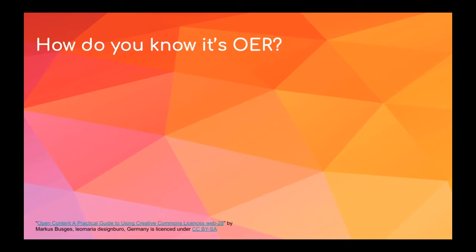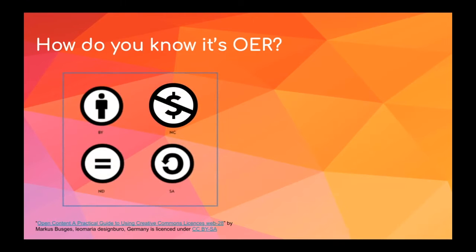Creative Commons licenses are based on four primary conditions. There's the attribution, or BY, that allows others to copy, distribute, display, and perform the work and derivative works based upon it — but credit must be given to the original creator. You'll find this condition in all of the Creative Commons licenses, except for the public domain, which I will discuss in a moment.